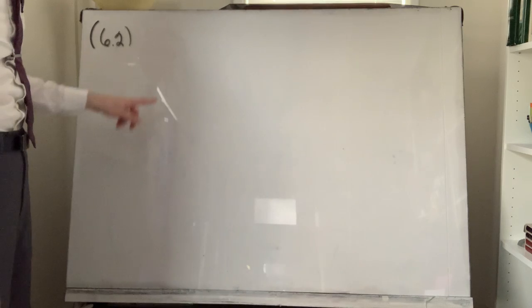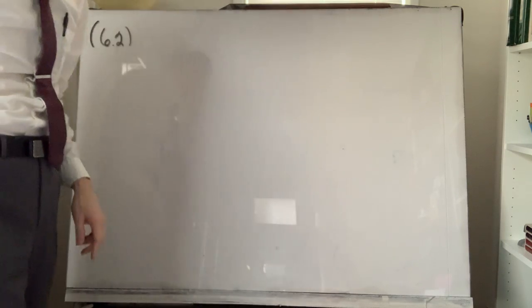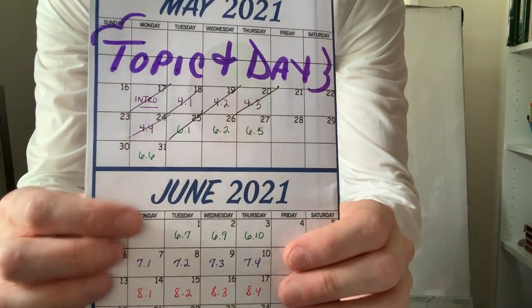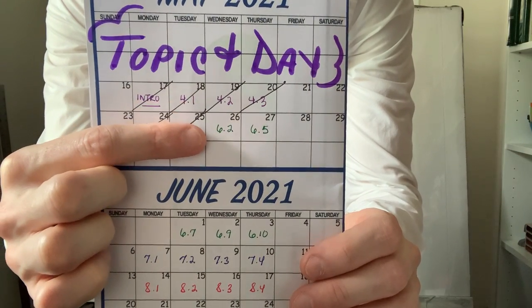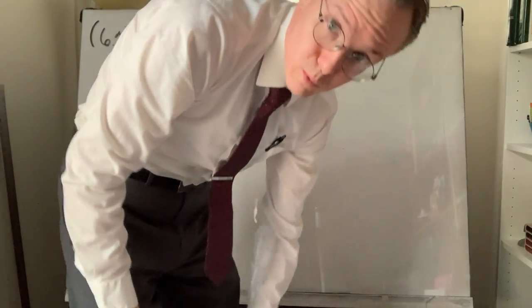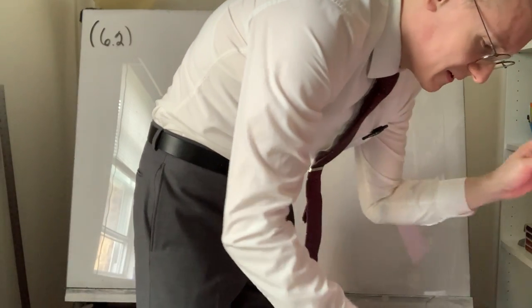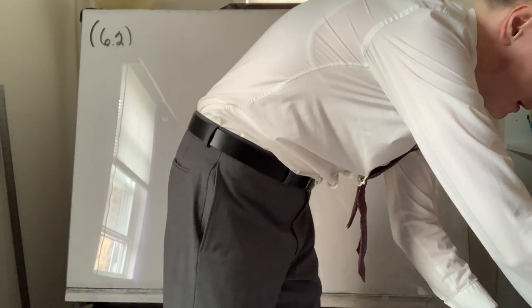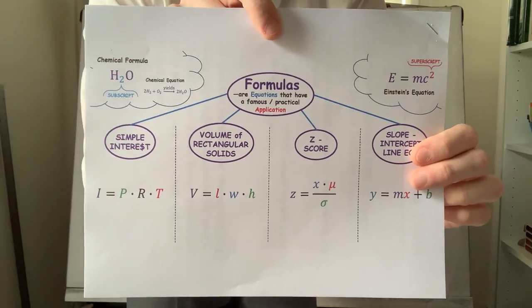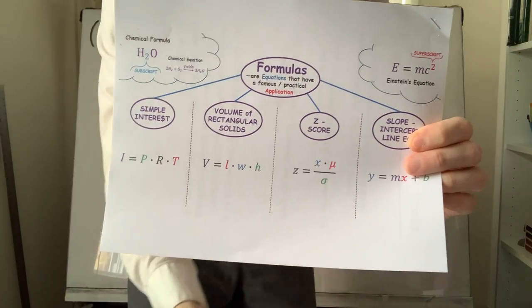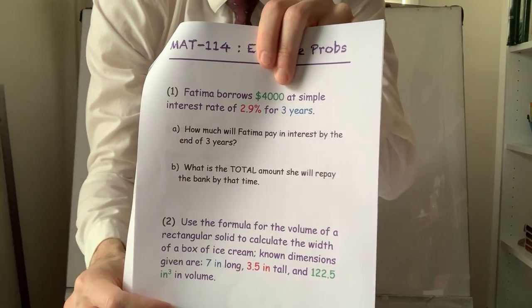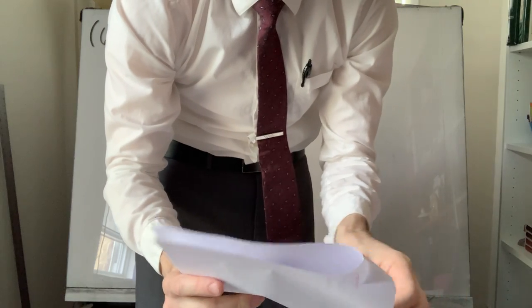Hello again folks, in MAT 114 today we're going to be covering section 6-2. Today is Wednesday May 26th. The video from yesterday took about 14 hours to upload but it's available now. The packet I have for you today consists of a page, a diagram, some concepts, and basically a summary of the formula. I typed the word problems rather than copying them, so I'm going to walk you through these, and there's a review portion as well.